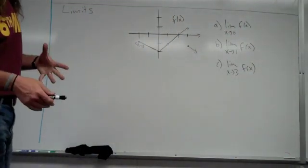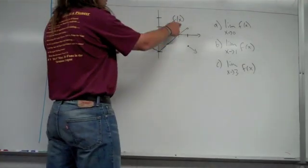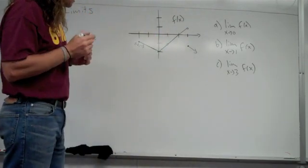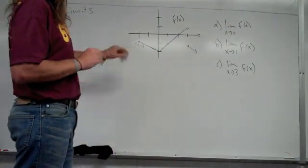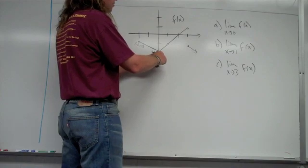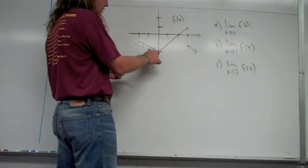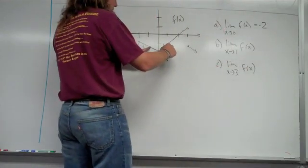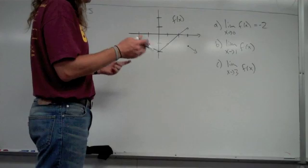Let's continue looking at limits graphically. We've looked at it graphically and done a table numerically. Here's a function f of x depicted by these lines. In part A, find the limit as x approaches 0 of f of x. As x approaches 0 from the left and the right hand side, what is the y value approaching? From both sides they go to the same place — the limit is negative 2 as x approaches 0.